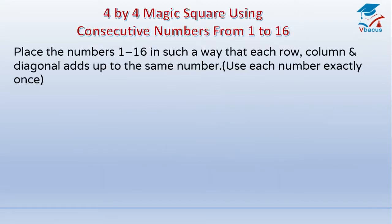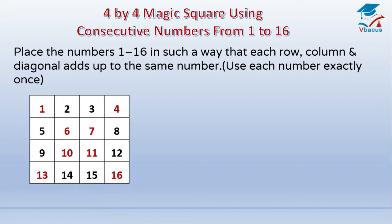4 by 4 magic square using consecutive numbers from 1 to 16. Place the numbers 1 to 16 in such a way that each row, column, and diagonal adds up to the same number — use each number exactly once. In row 1 I have written 1 to 4, row 2: 5 to 8, row 3: 9 to 12, and row 4: 13 to 16. In sequence I have written the numbers.